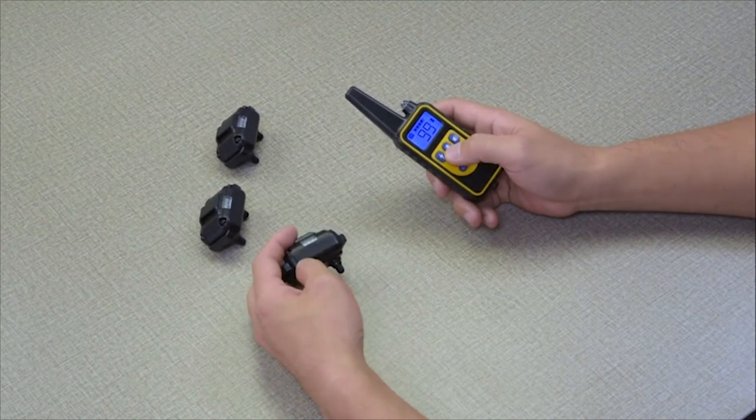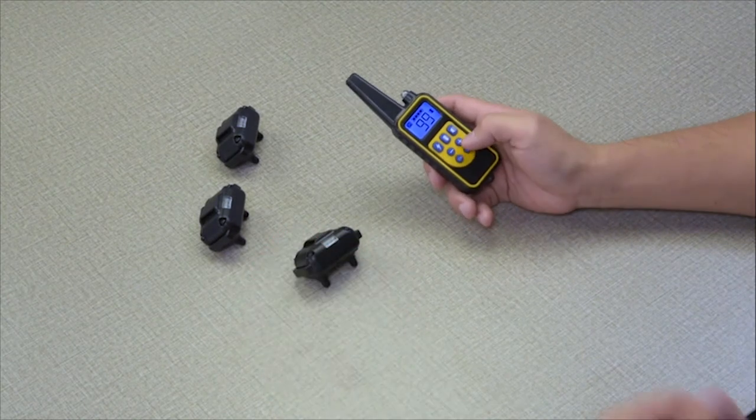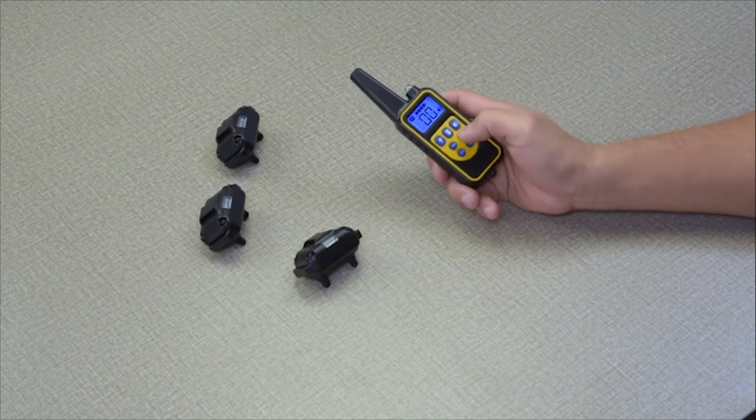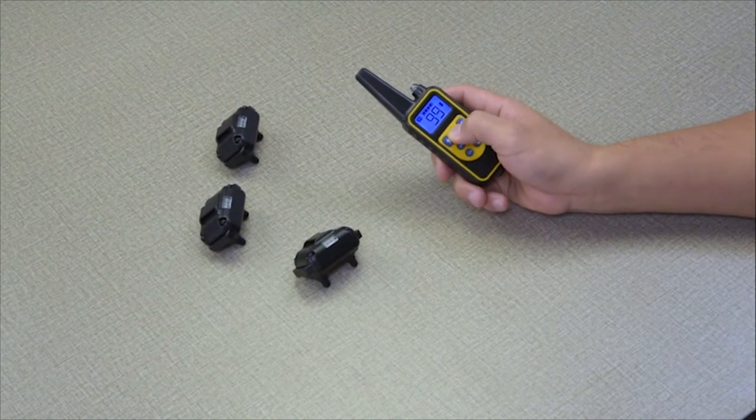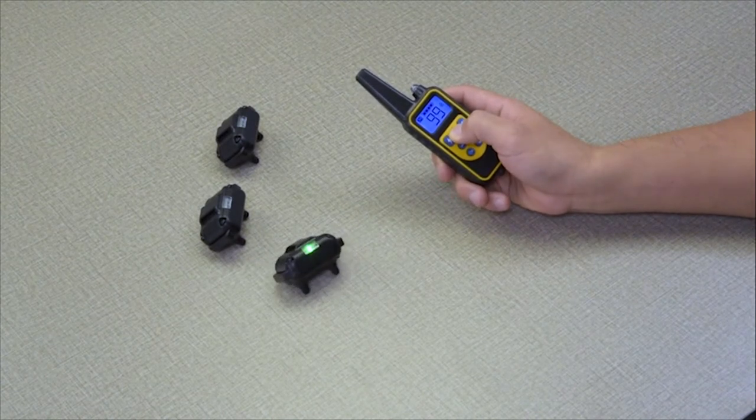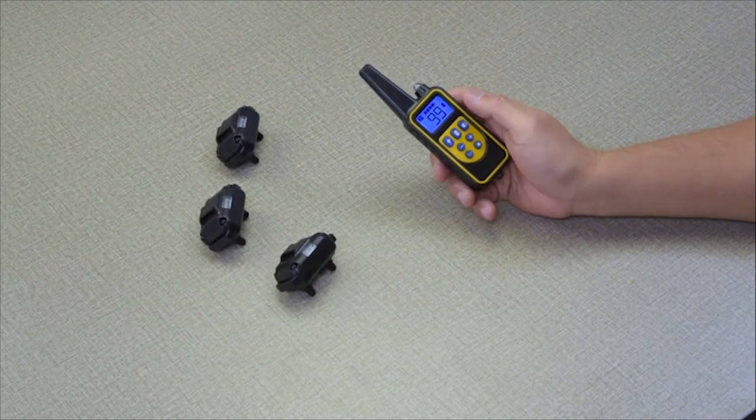Secondly, press and hold the power button for about 3 seconds until it beeps, and the indicating light flashes quickly. Thirdly, press and hold the power button on the transmitter. The receiver will beep again when the pairing is completed.